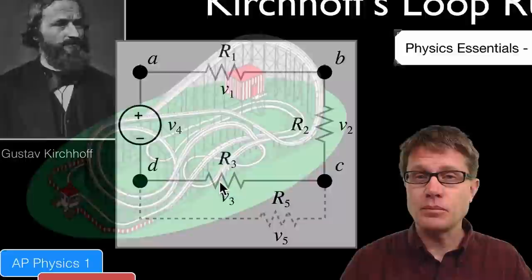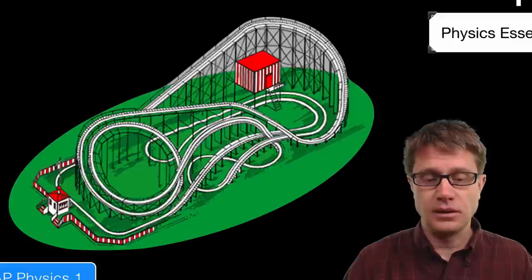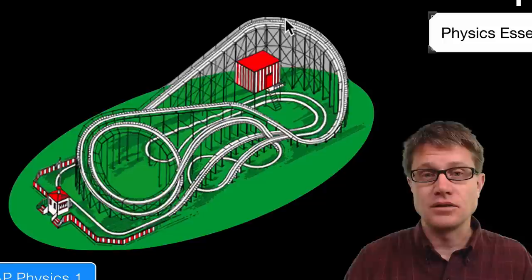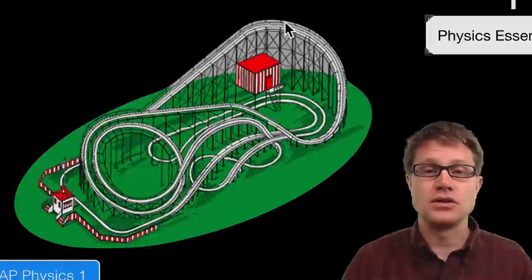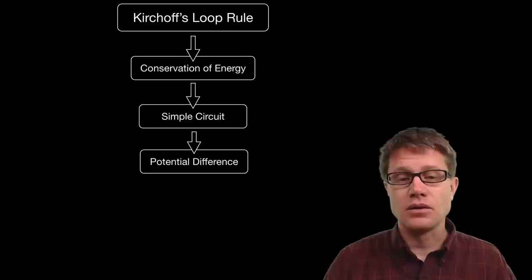Conceptually, a better way to think of that is like a roller coaster. When you are on a roller coaster there is going to be a lift to the top. The cars have potential energy which is converted into kinetic energy, and if they play it right you get right back to the beginning with no energy left. Kirchhoff's loop rule is really just the conservation of energy in a loop or simple circuit — the voltage or potential difference around the whole loop equals zero.